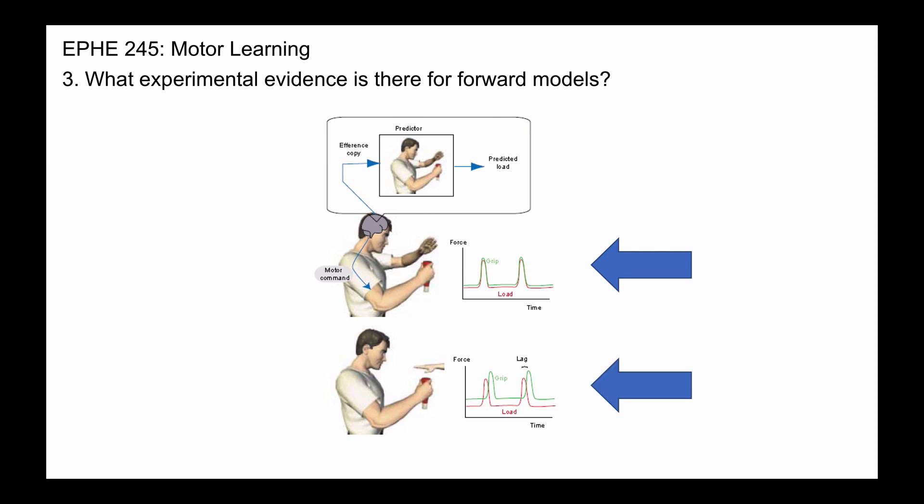However, in the bottom panel you'll notice that the external force is coming from someone else and you see the load force in red. What you'll notice is the grip force now lags the load force, and the reason it lags is because the forward model is unable to predict the load force because the force is coming from an external source.